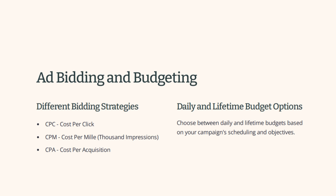CPM stands for impressions. If you want your ad to be seen by everyone within 30 miles of 123 Main Street in New Jersey, you show it to as many people as possible. The idea behind this strategy is to get that information in front of as many people as possible. We talked about three different campaigns — you'll mix the CPM strategy with the appropriate campaign to maximize reach in that geographic region.